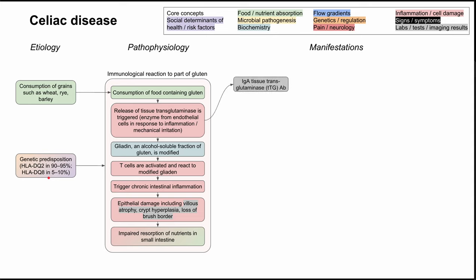Because you have this release of transglutaminase, you'll have an antibody against it, and this is actually one of the blood tests you can do to help in your diagnosis of celiac disease. That's the IgA tissue transglutaminase antibody, also called the TTG antibody.